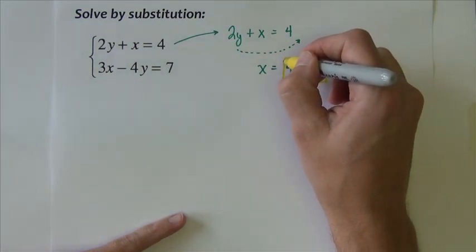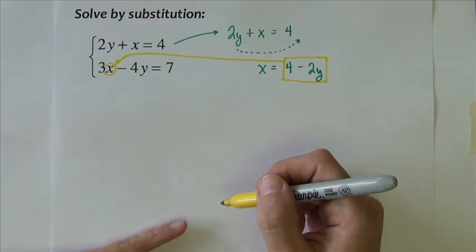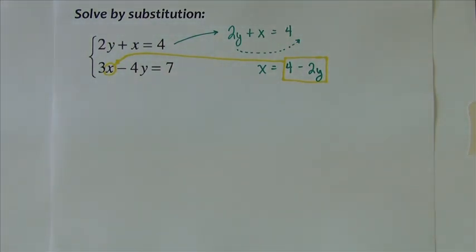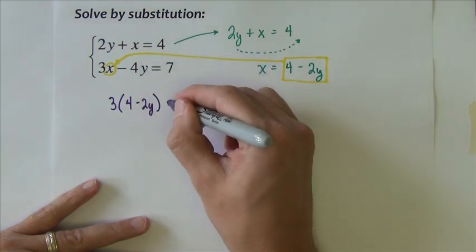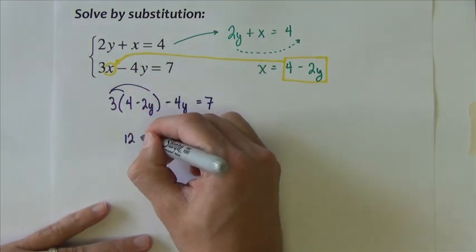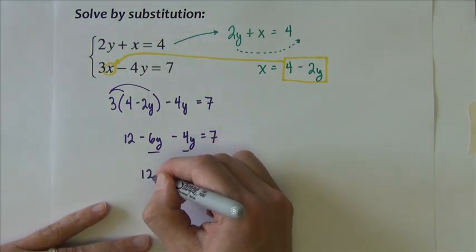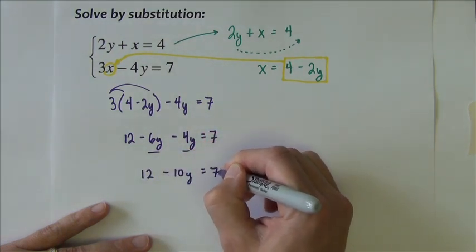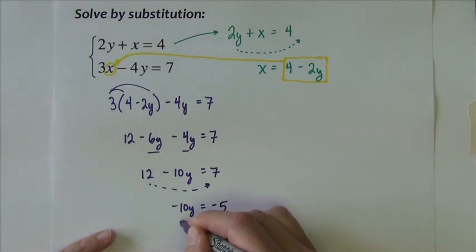We've got x equals 4 minus 2y, which is going to replace the x in the other equation. So I've got 3 times 4 minus 2y. The rest of the equation stays as it is: minus 4y equals 7. I'm going to distribute, giving me 12 minus 6y minus 4y equals 7. Combine the like terms: 12 minus 10y equals 7. I'm going to subtract 12. Negative 10y equals negative 5. Divide by negative 10. We get y equals one half.